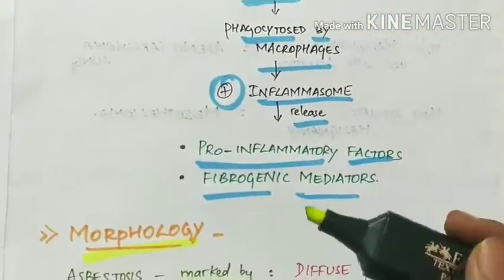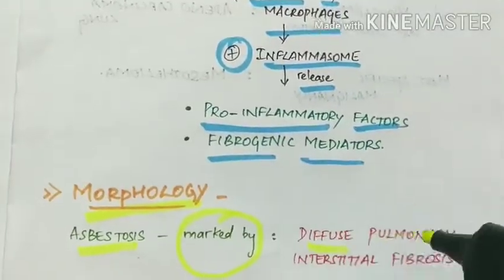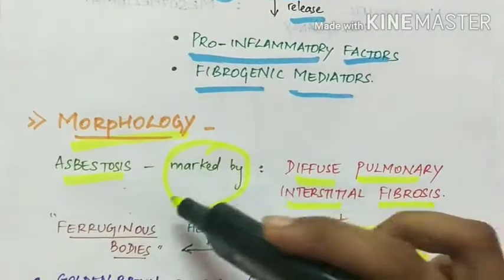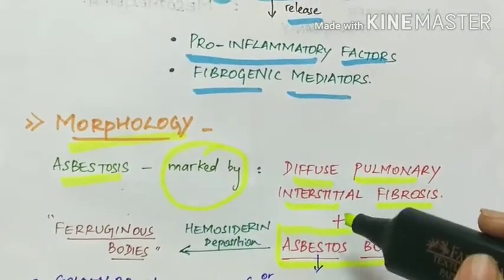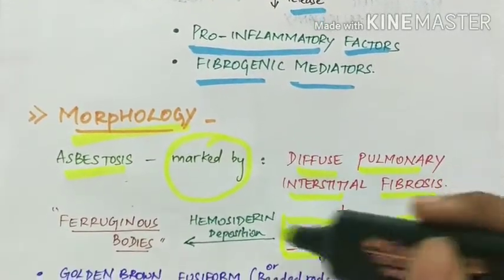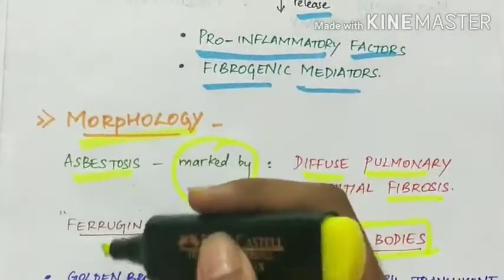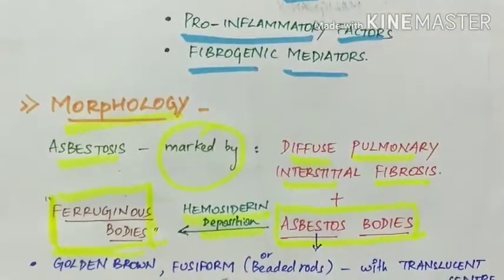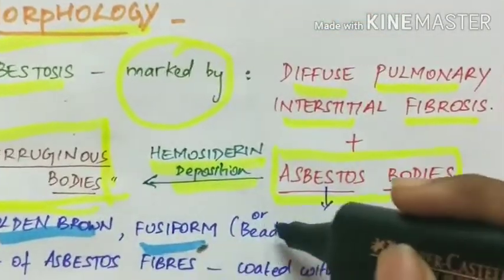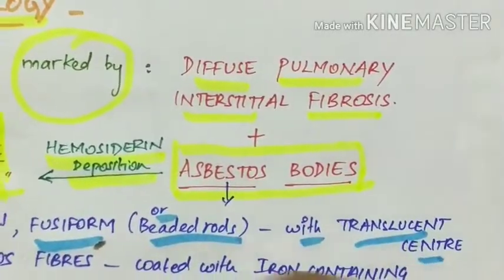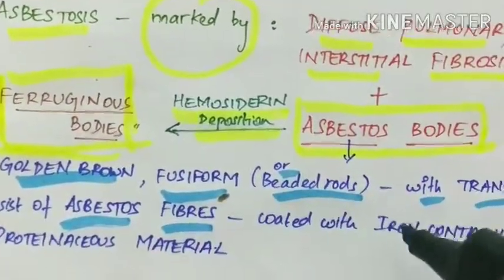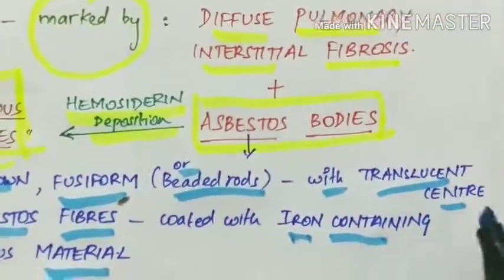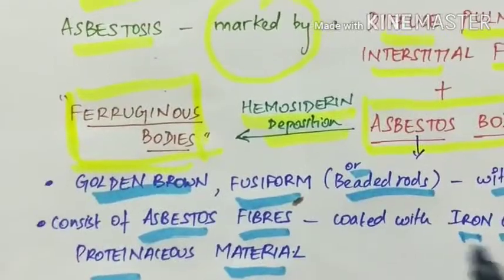Asbestosis is marked by diffuse pulmonary interstitial fibrosis along with the presence of asbestos bodies. When asbestos bodies are deposited with hemosiderin, they are called ferruginous bodies, which is characteristic of asbestosis. Asbestos bodies are golden brown fusiform or beaded rods with a translucent centre, and consist of asbestos fibres coated with iron-containing proteinaceous material.